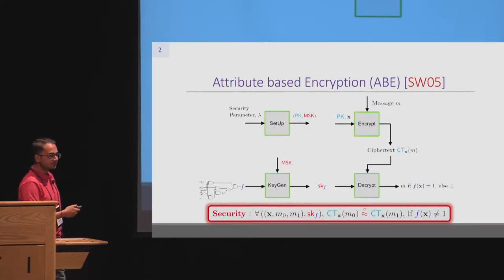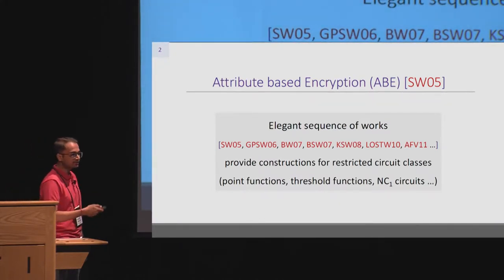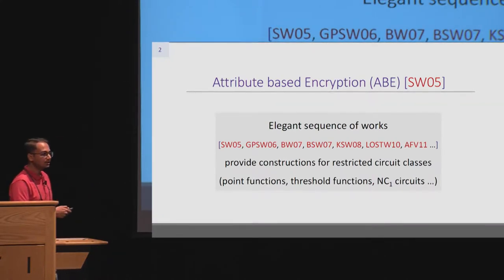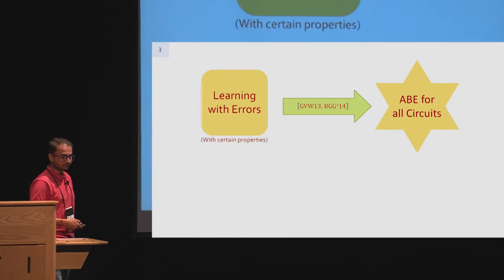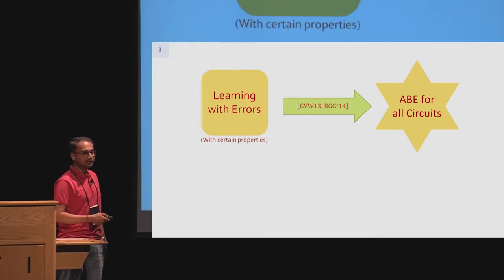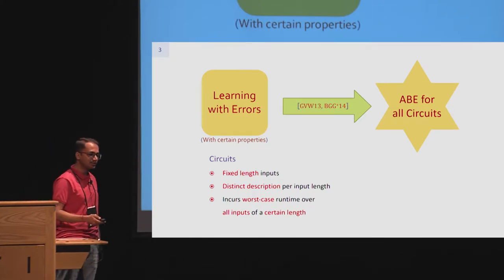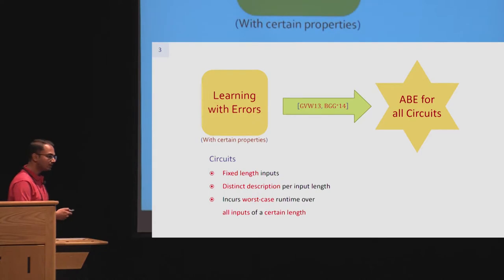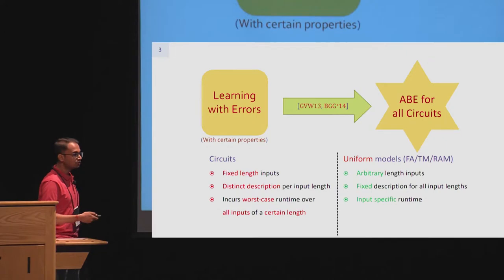This notion of attribute-based encryption has seen an elegant sequence of works from 2005 onward with constructions for restricted circuit classes, until in 2013 Gorbunov et al. first showed how to support all circuits from the learning with errors assumption. Even though ABE for all circuits was realized, circuits have inherent drawbacks: they always provide fixed-length input support, their description changes based on input lengths, and they incur worst-case runtime. So our attention turns towards uniform models of computation like finite automata, Turing machines, or RAM, which have arbitrary length input support with a fixed description size and incur input-specific runtimes.